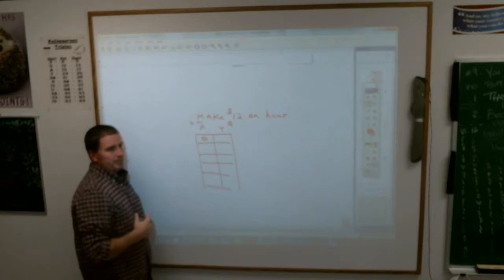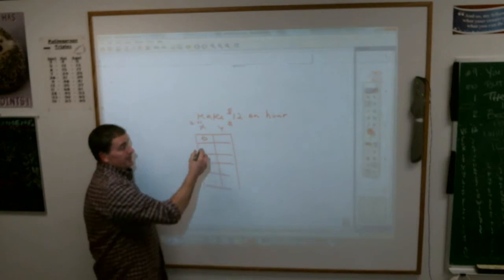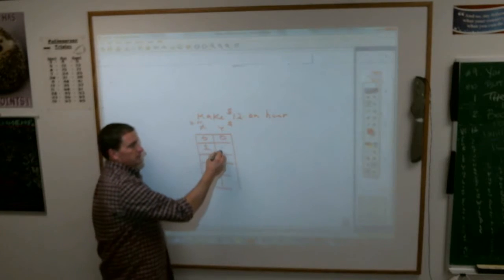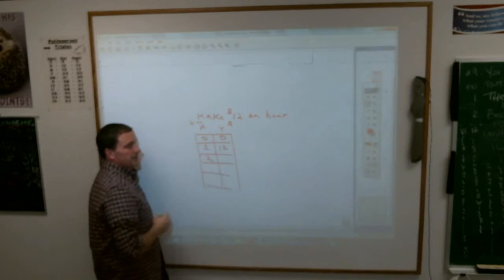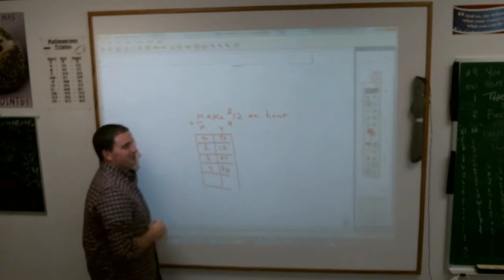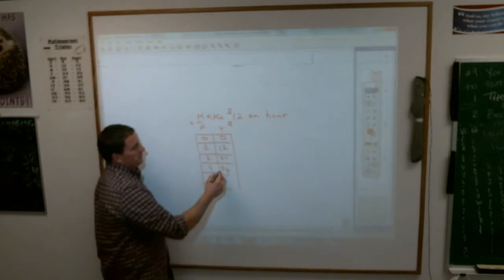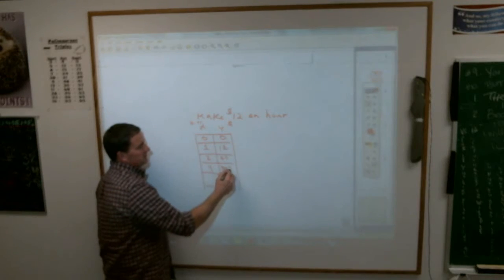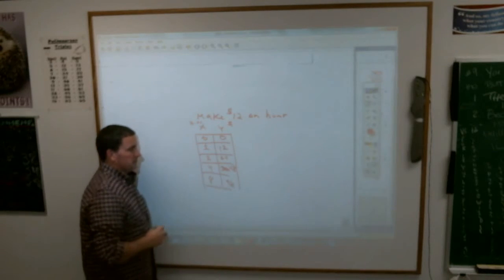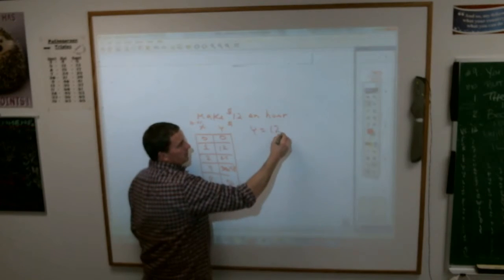If we filled in those blanks, what would we get? If you work zero hours, how much money are you going to make? Zero dollars. If you work one hour, you're going to make $12. If you work two hours, you're going to get $24. If you work four hours, $48. If you work eight hours, you make $96, right? If you were to write the equation for that, you would get Y equals 12 times X, right?